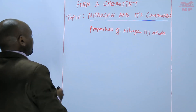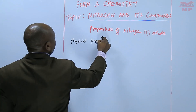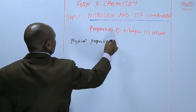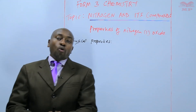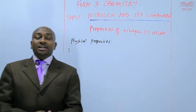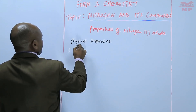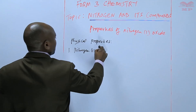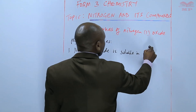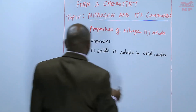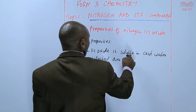We are going to start with the physical properties. During preparation, we saw that nitrogen one oxide is collected over warm water, and that is because it is soluble in cold water. So basically, nitrogen one oxide is soluble in cold water, hence collected over warm water.